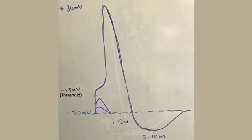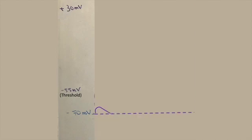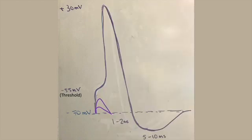The action potential is very fast, one to two milliseconds. Each time it happens, it happens the same way and has the same characteristics.